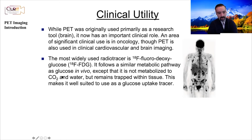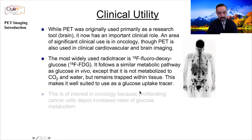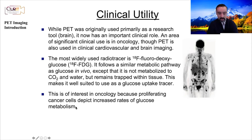The most widely used radiotracer has been fluorodeoxyglucose radiolabeled with fluorine-18. It follows a similar metabolic pathway as glucose in vivo, except that it is not metabolized all the way and gets trapped within tissue. That's an advantage because it accumulates, for example, in tumors, making it well suited as a glucose uptake radiotracer. This is especially of interest in oncology, where cancer cells that are proliferating will depict increased rates of glucose metabolism.